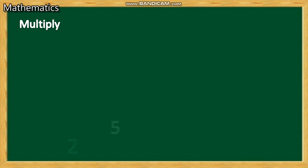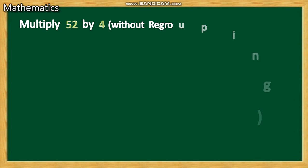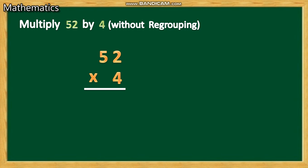Let's do one more question. Multiply 52 by 4. We are doing this without regrouping. Write 52 with the multiplication symbol, then by 4: 52 × 4. Draw a line. Now we want to write the multiplication table of 4.